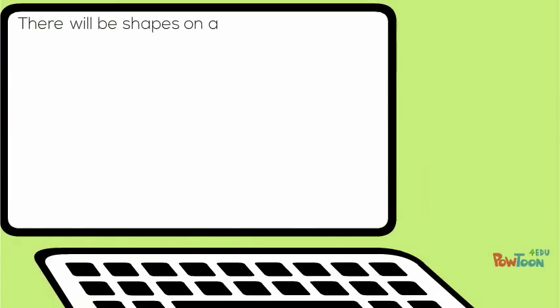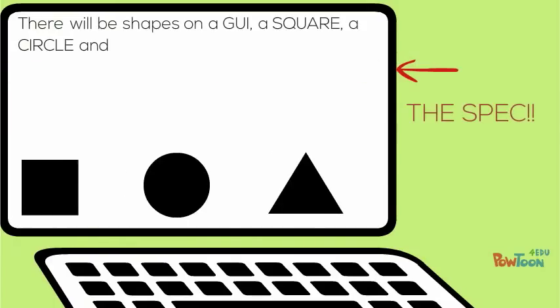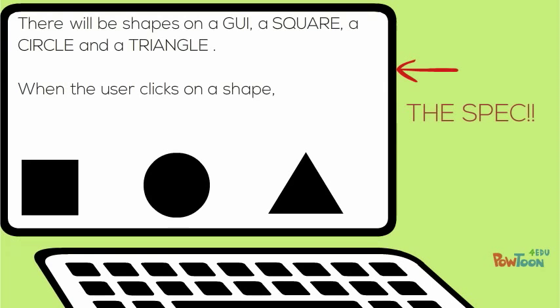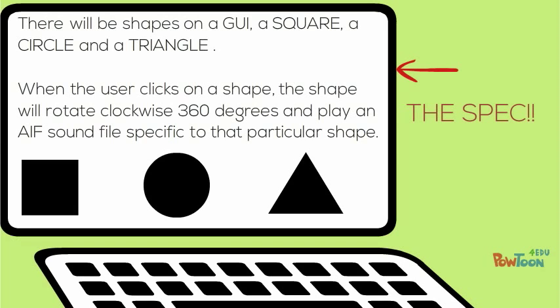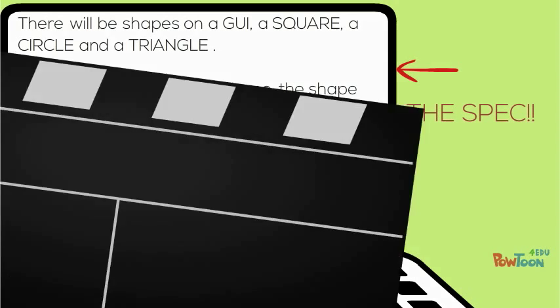There were three shapes: square, circle, and a triangle. When the user clicks on a shape, the shape rotates 360 degrees clockwise and plays an AIF sound file corresponding to that shape.